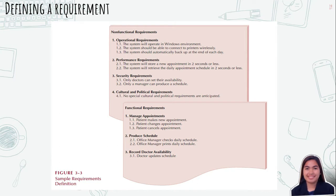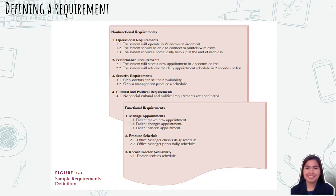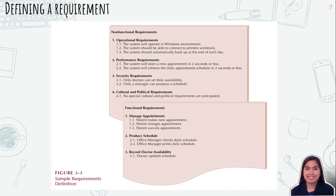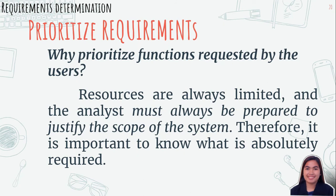This image shows a sample requirements definition for an appointment system for a typical doctor's office. It contains both functional and non-functional requirements. The functional requirements include managing appointments, producing schedules, and recording the availability of individual doctors. The non-functional requirements include items such as the expected amount of time to store a new appointment, the need to support wireless printing, and which types of employees have access to different parts of the system.